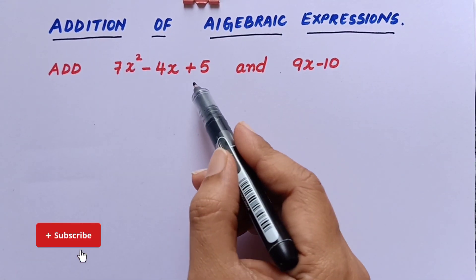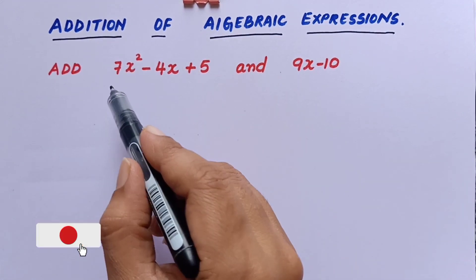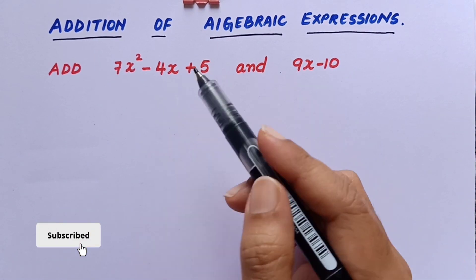Okay, we'll add 7x² - 4x + 5 and 9x - 10. So first what we need to do is we'll have to write each expression in a separate row.